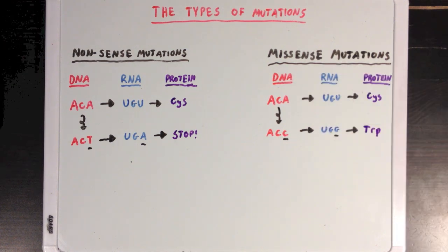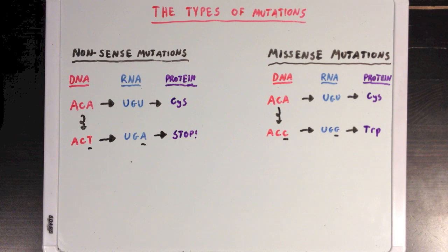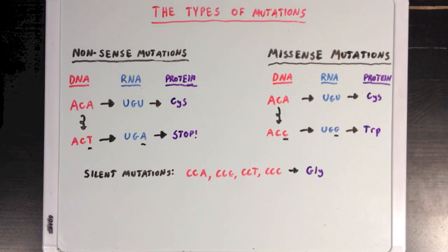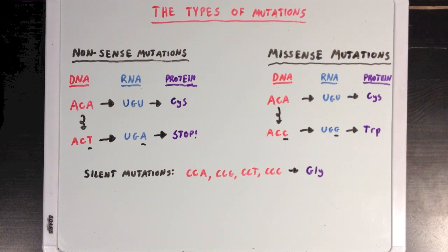Nonsense mutations probably affect the resulting protein a lot more than missense mutations do, since that new stop codon could chop off a huge section of the protein instead of just changing one amino acid to another. We can divide missense mutations even further into smaller categories. Silent mutations are when the mutation doesn't actually affect the protein at all. Since many different RNA codons can code for the same amino acid, it's possible that the mutation might not affect the protein at all. For example, CCA, CCG, CCT, and CCC in a section of DNA will all end up coding for glycine, so if you change the third base, it wouldn't affect the final protein.